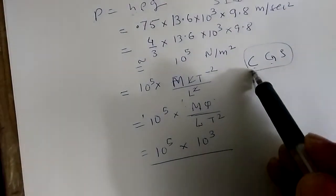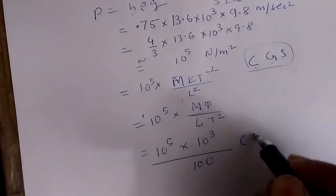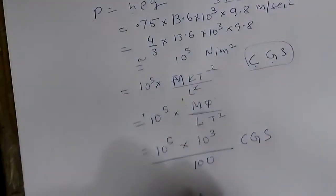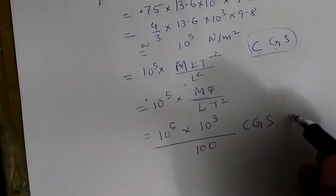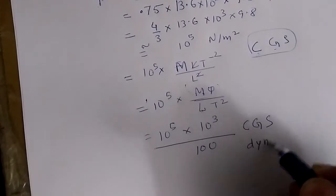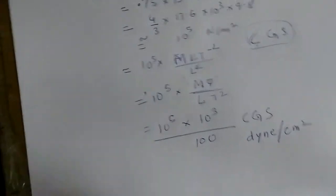But CGS unit like centimeter, so one meter is 100 centimeter. Now, this becomes CGS unit, and the pressure in CGS unit is called dyne per centimeter square. In CGS unit, they have a particular name for the force, is dyne, and force per centimeter square is the CGS unit.